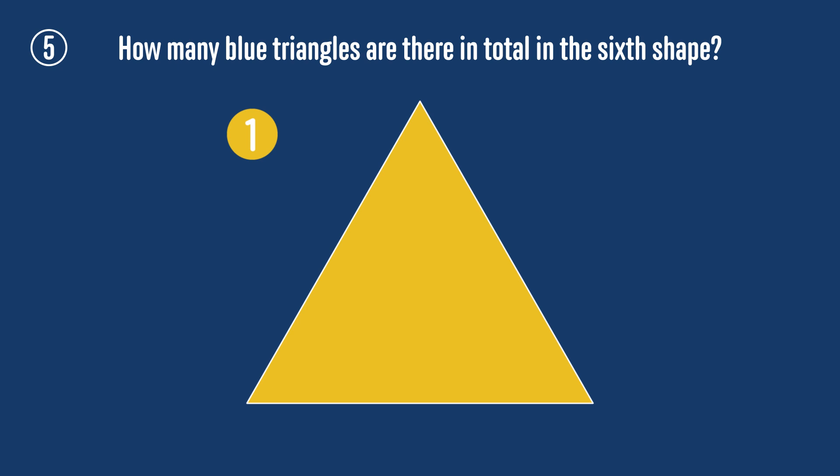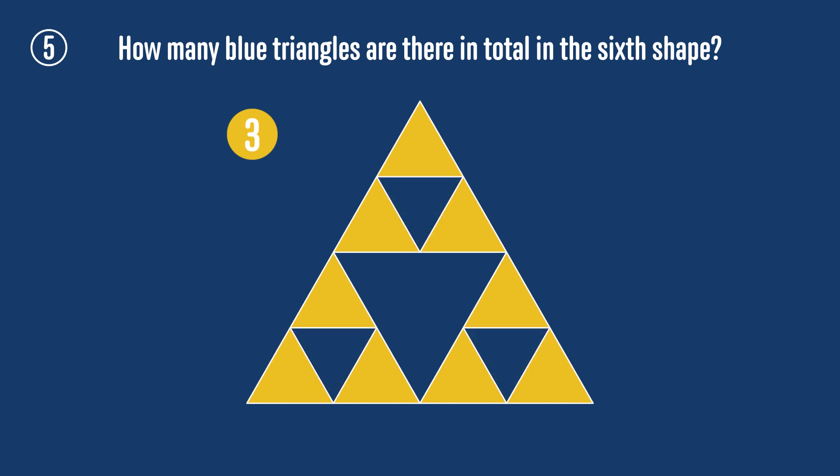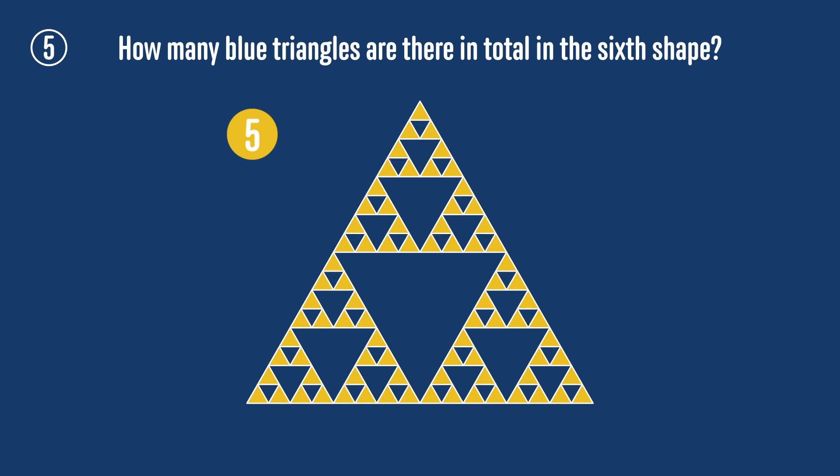In this challenge, we'll consider a sequence of shapes. The first shape is an equilateral triangle. To form the second shape, we'll divide this triangle into four identical smaller triangles, and cut out the middle one. To make the third shape, we cut out even smaller triangles from the previous shape in the same way, and repeat this process for each of the following shapes. If we continue in this way, how many blue triangles will be cut out in total from the sixth shape? For this challenge, I don't recommend counting the triangles directly.